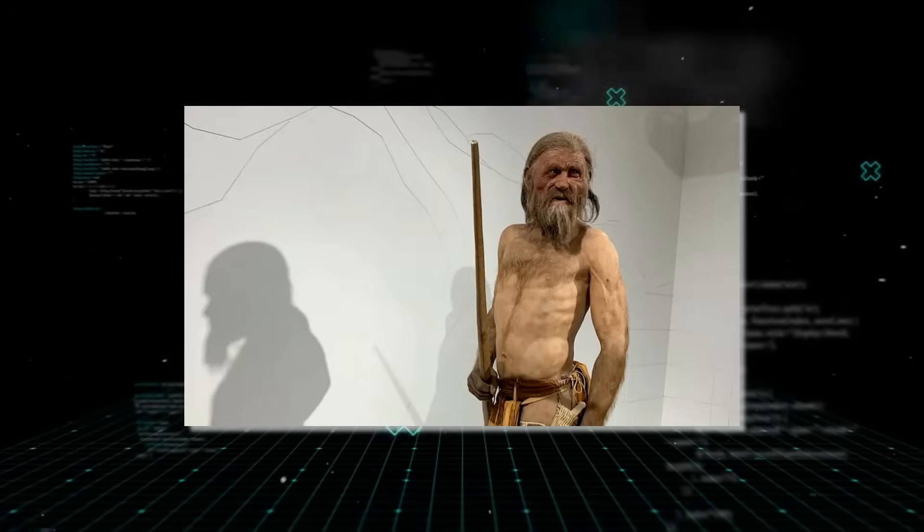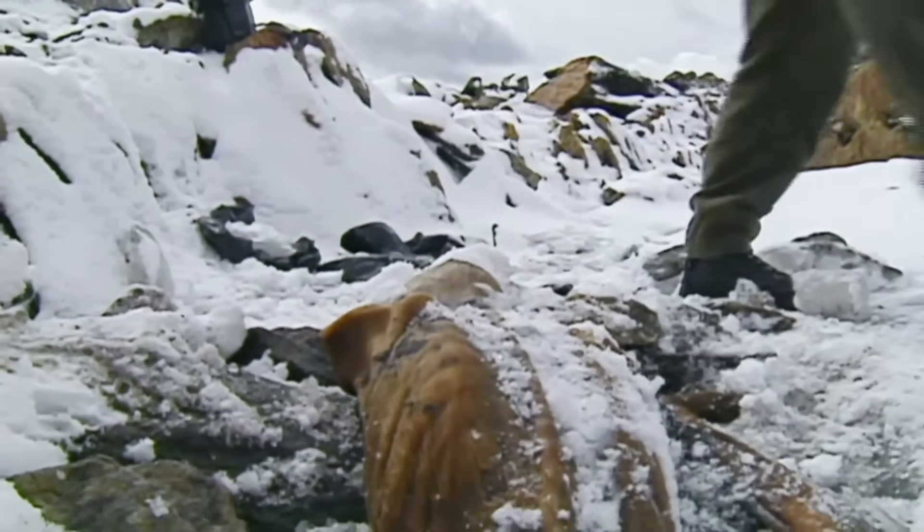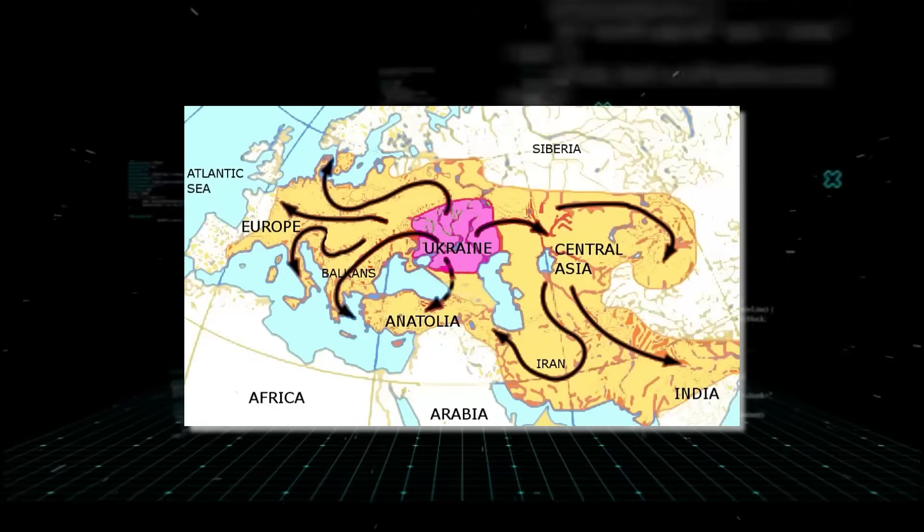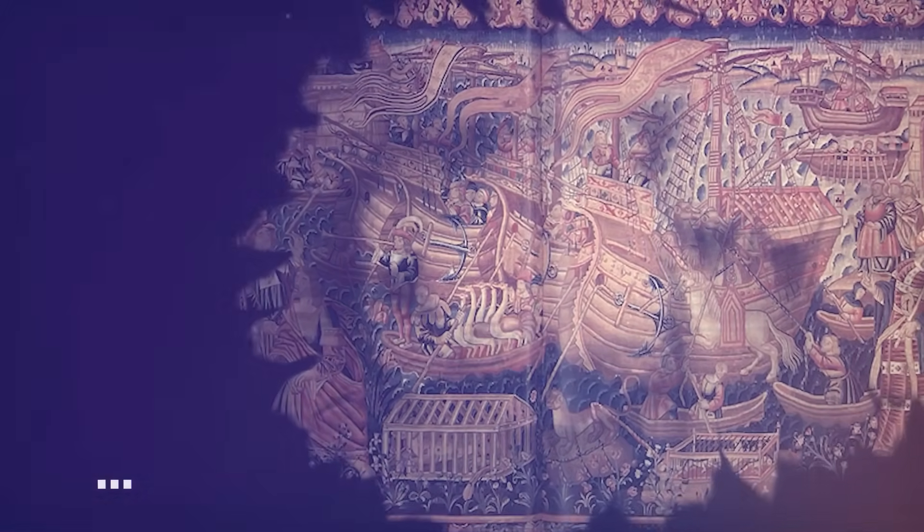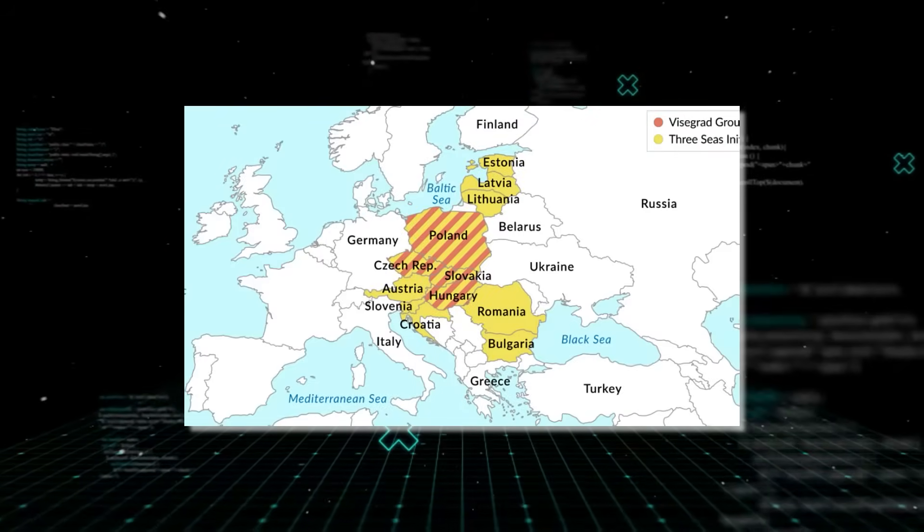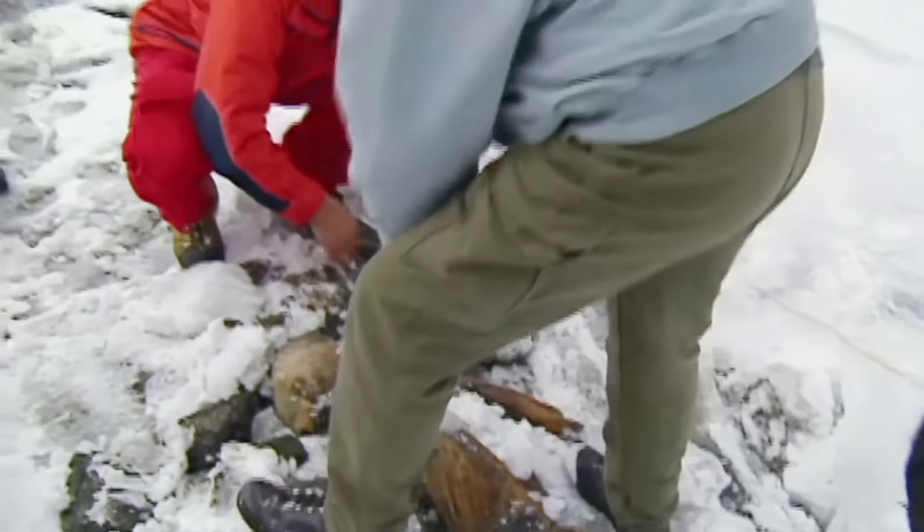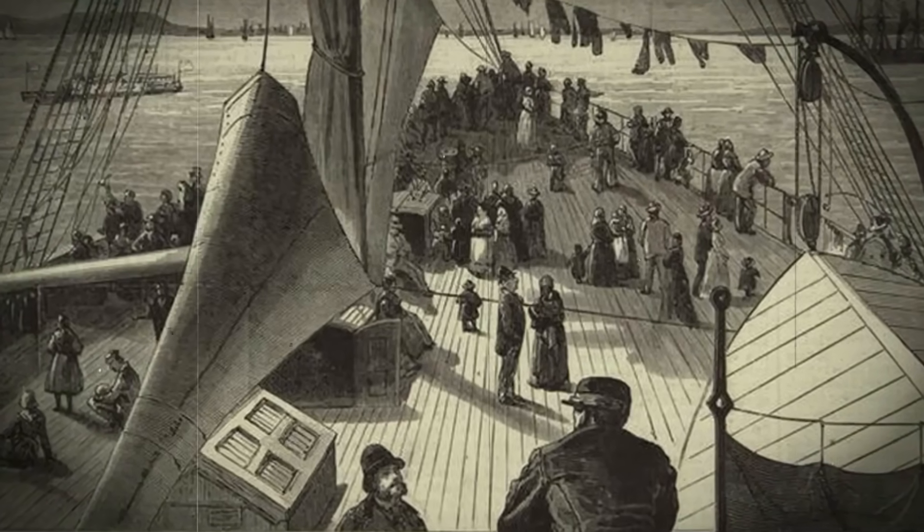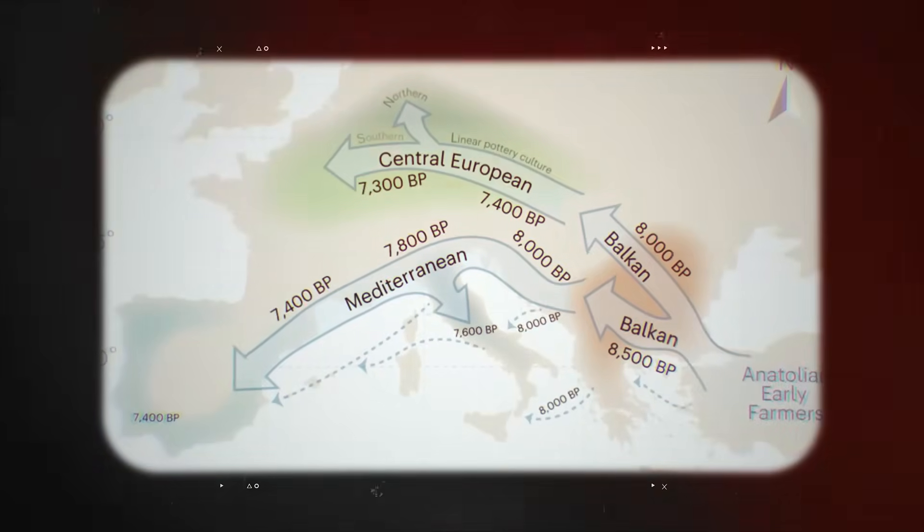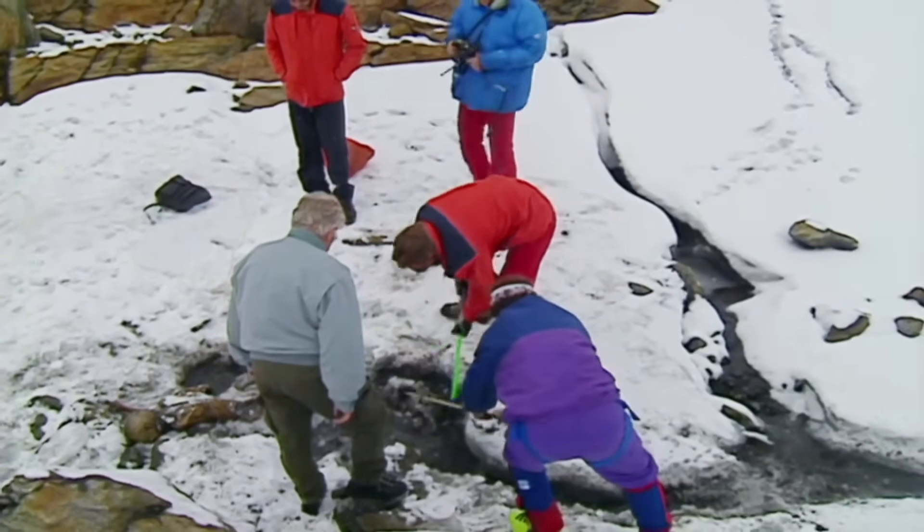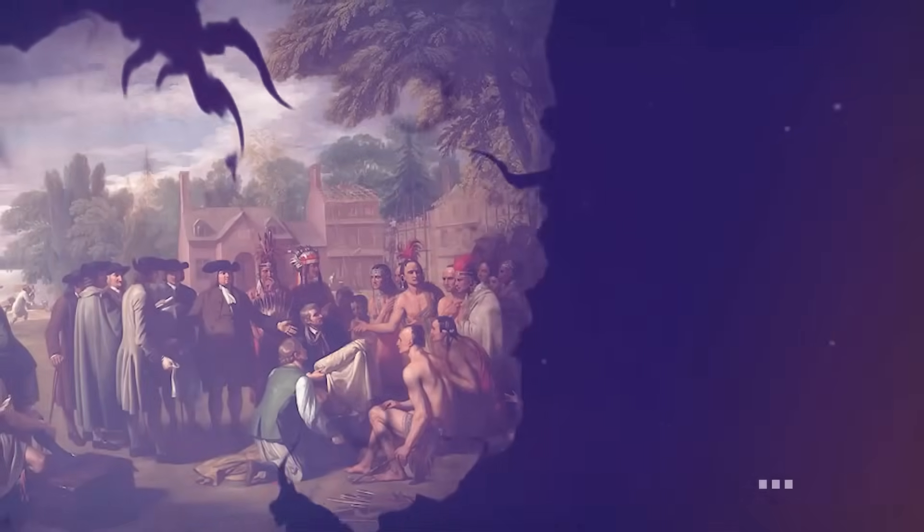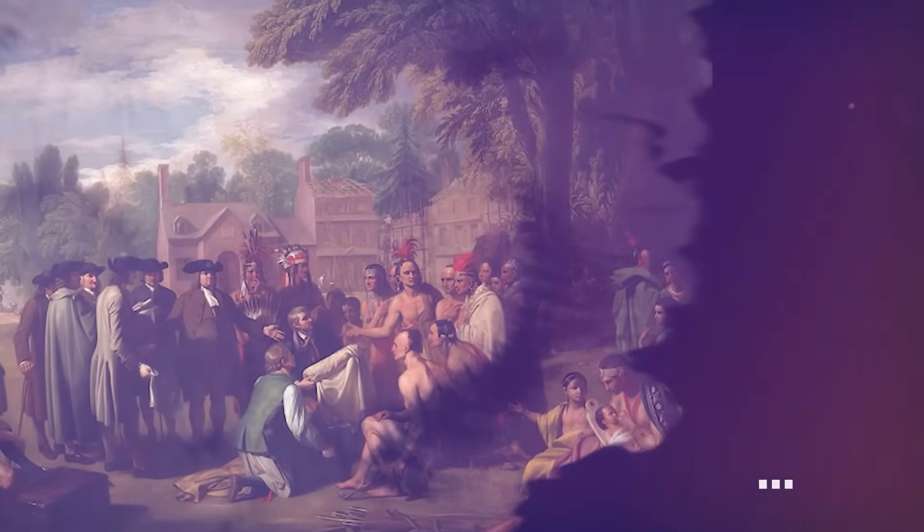The findings made headlines everywhere. They concluded Ötzi had light skin and brown eyes, which was a surprise given his dark, mummified appearance. But here's the kicker. The analysis revealed what they called steppe ancestry. This was a genetic link to Indo-European people who, according to the history books, arrived in Central Europe hundreds of years after Ötzi lived. If this was true, it meant our entire timeline of early European migration was wrong. It suggested these massive population movements happened way earlier than anyone thought. Ötzi was suddenly seen as this incredible genetic bridge connecting ancient, isolated Europeans with the newcomers who would eventually shape the continent. It was a fantastic story, one that rewrote history.